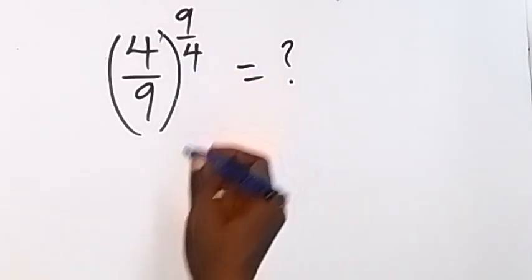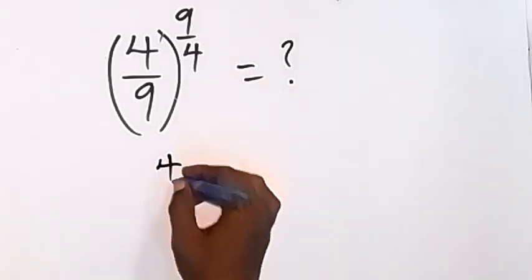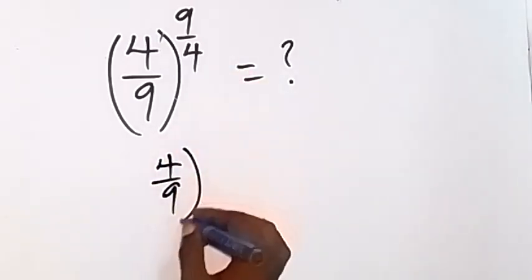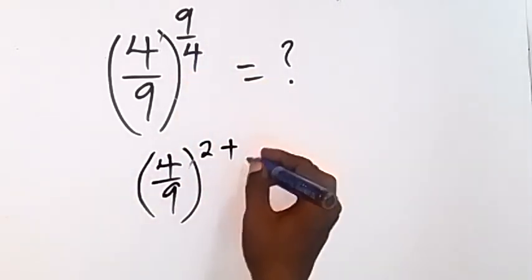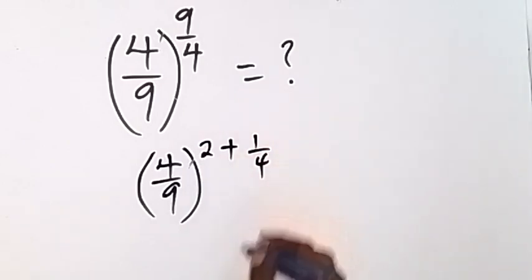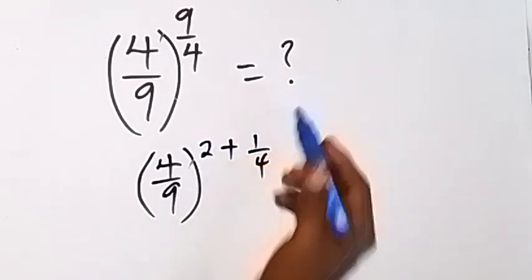Now here, let's break the power down. We can say we have 4/9 raised to power. Here we can split this 9/4 to 2 plus 1/4, so because this will still give us 9/4.